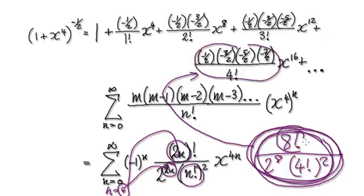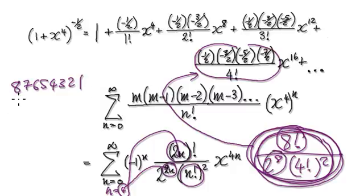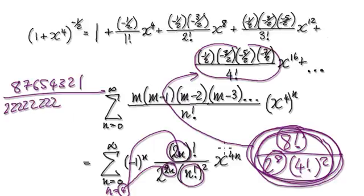Because 8 factorial is 8 × 7 × 6 × 5 × 4 × 3 × 2 × 1. And then you've got 2 to the power of 8, so that would be 2 times 2 times 2 times 2 times 2, 6, 7, 8. And then 4 factorial is 4, 3, 2, 1, and then 4, 3, 2, 1 again because it's squared. This thing here actually equals this thing here.